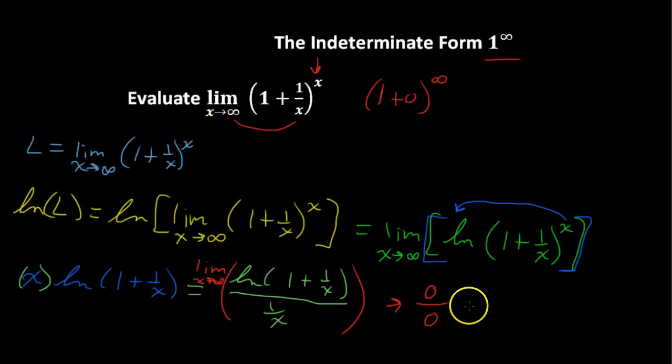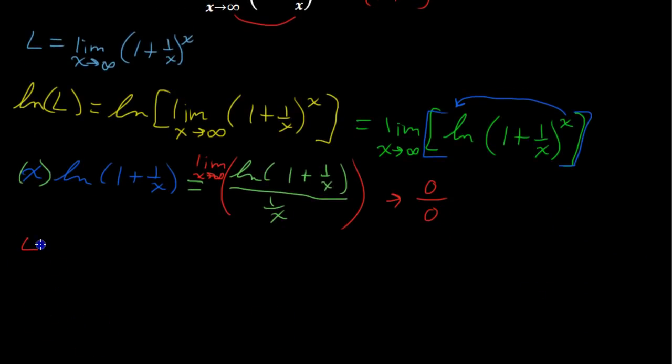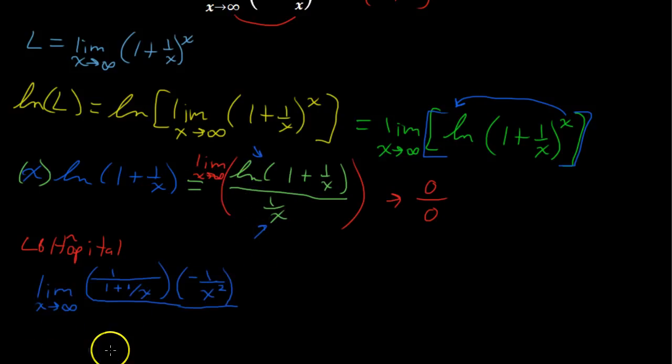Well, when you have that indeterminate form of 0 over 0 or infinity over infinity, then you can apply L'Hopital's rule. So let's do that. I'll write a little note here and say that we are applying L'Hopital's rule. And that is taking the first derivative of the numerator and the first derivative of the denominator. So the first derivative of the numerator is 1 over 1 plus 1 over x, and then by the chain rule, we have to take the derivative of what is inside here. The derivative of 1 plus 1 over x is negative 1 over x squared. Now the derivative of the denominator is negative 1 over x squared. And it looks like we lucked out here. We can cancel those out. And now we just have the limit of this.